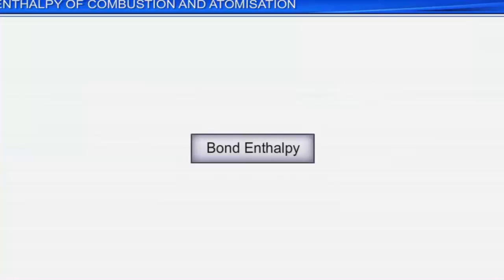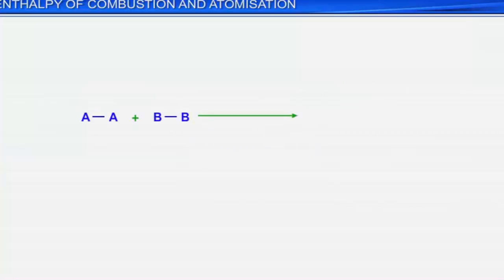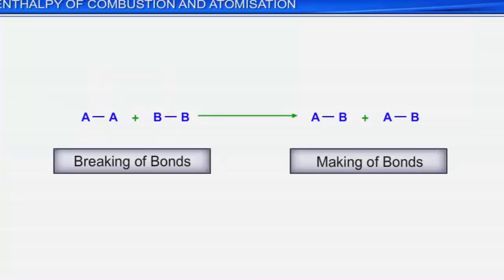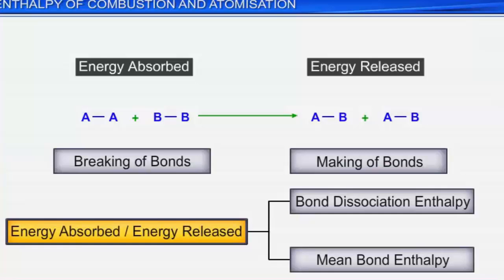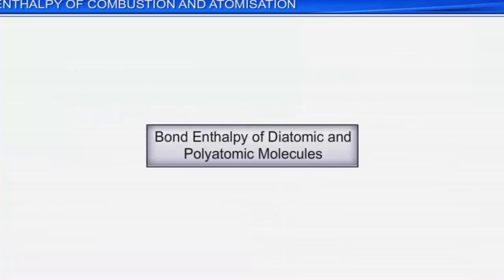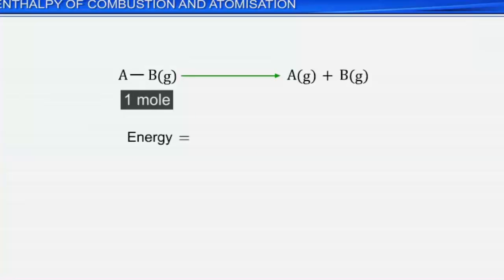Now let's look at bond enthalpy. We know that chemical reactions involve the breaking and making of bonds. The breaking of bonds requires energy, while the making of bonds involves the release of energy. The enthalpy changes associated with chemical bonds are expressed in terms of bond dissociation enthalpy and mean bond enthalpy. In case of diatomic molecules, bond dissociation enthalpy is the change in enthalpy when one mole of covalent bonds of a gaseous covalent compound is broken to form products in the gas phase.